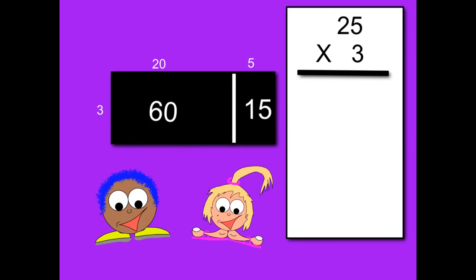I get it. So it's 20 times 3, and that's 60. And then you've got 5 times 3, which makes 15. That's right, Trish, but we're not finished yet.